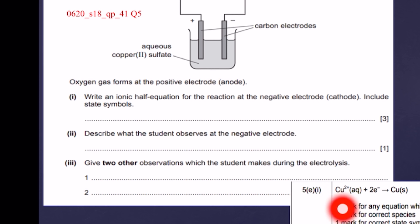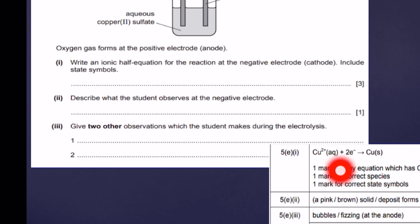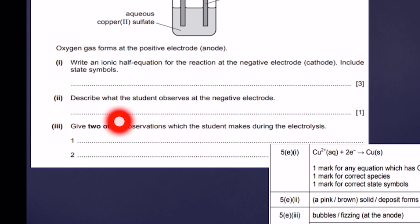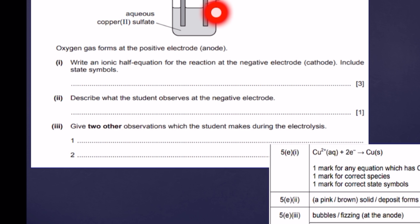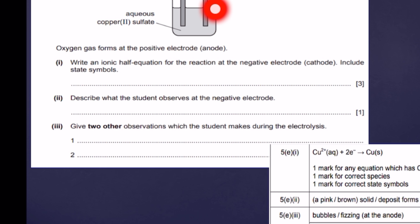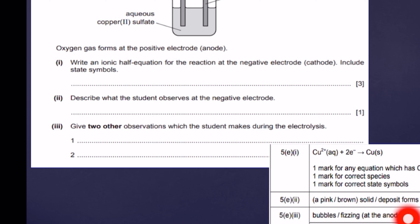Describe what the student observes at the negative electrode. Because copper ions are discharged and reduced to solid copper, a pink-brown solid deposit forms at the negative electrode.